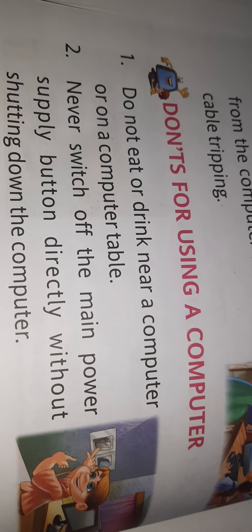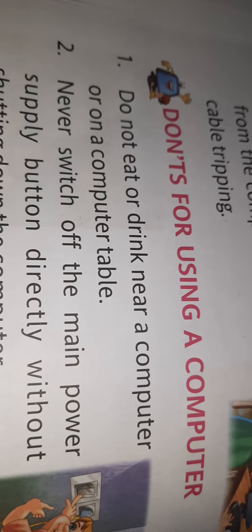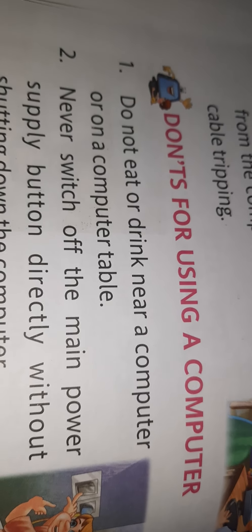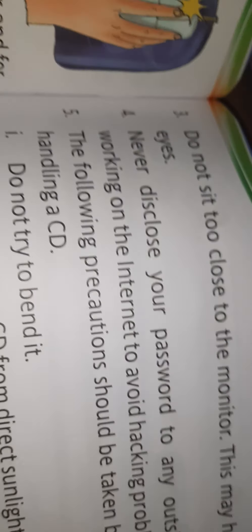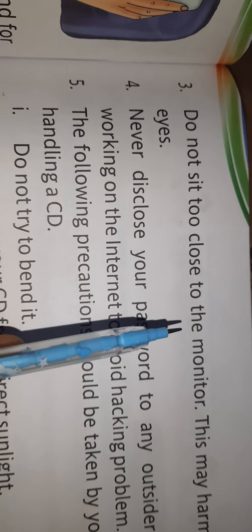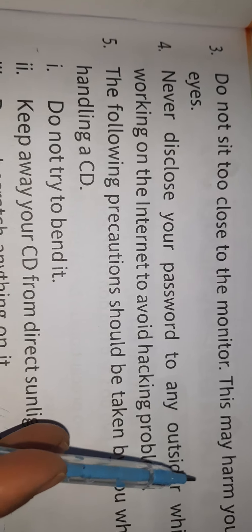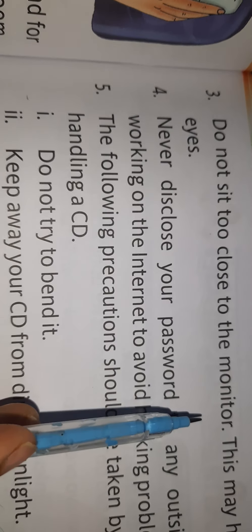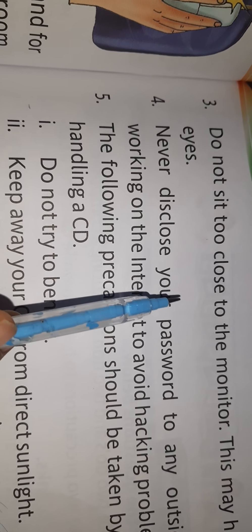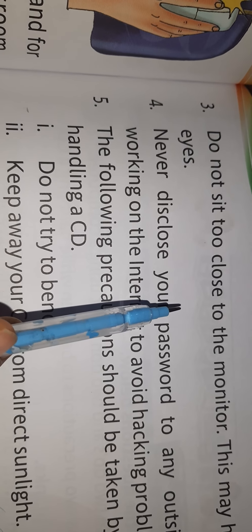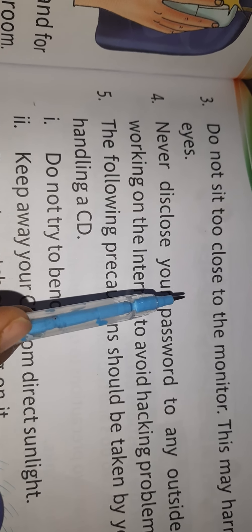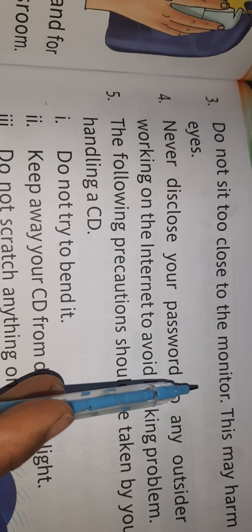First of all, because you all are small children, you should simply avoid switching it on or off — let your parents do it. Then, do not sit too close to the monitor, as this may harm your eyes. You should never sit very close to the monitor, just like you should not bring your phone very close to your eyes because it may affect your eyes. The same is the case with the monitor.